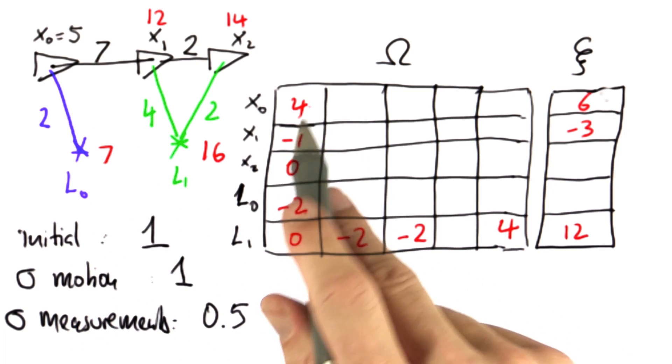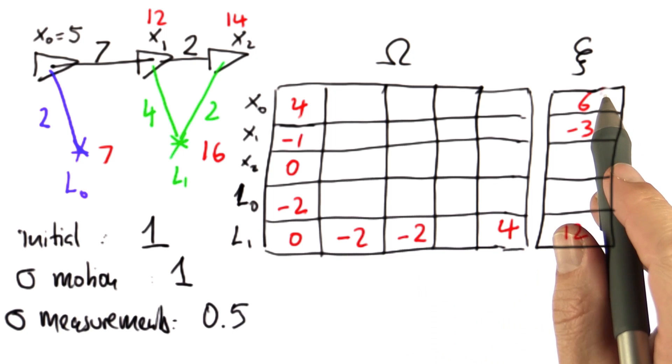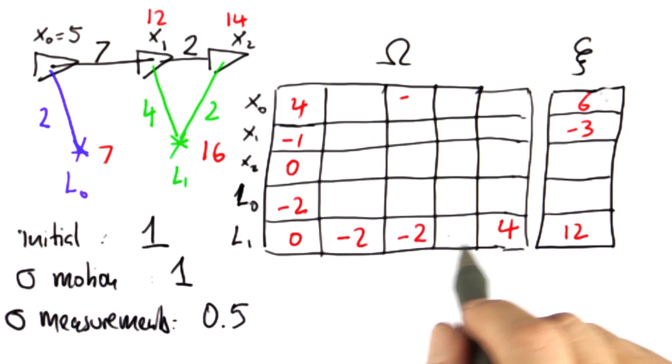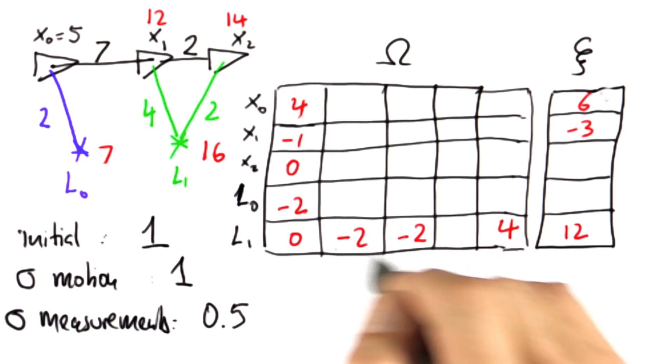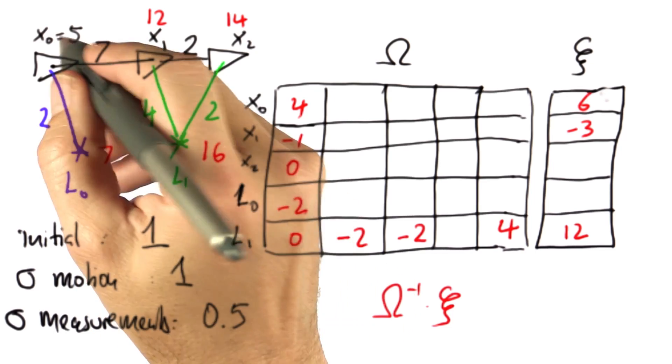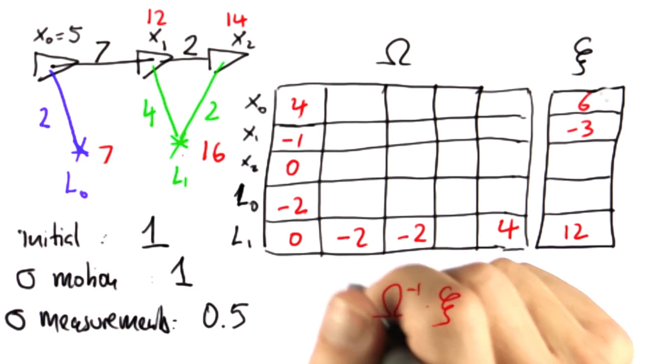I gave you some of the sigma values and some of the xi values, and I want you to fill in the missing values over here. You can check whether you got them correct by verifying that I got those numbers correct. And you can also solve for omega minus 1 times xi, and out should come the red positions shown in the diagram over here.